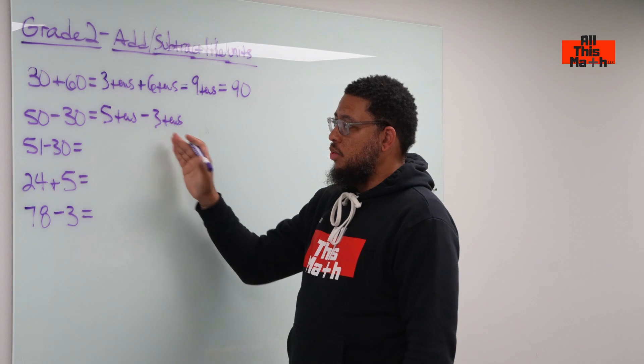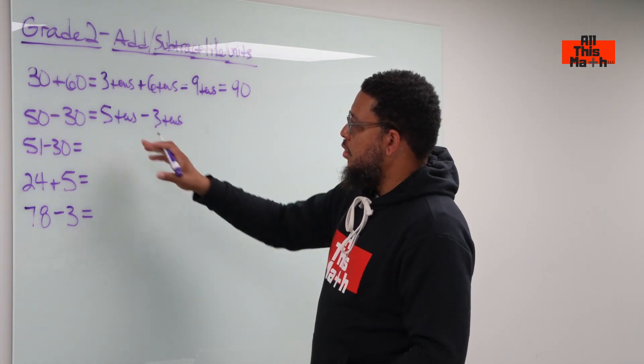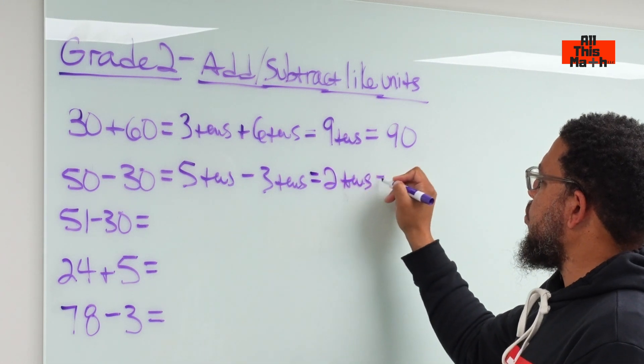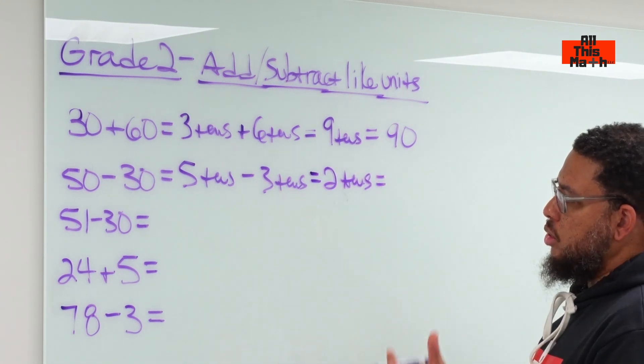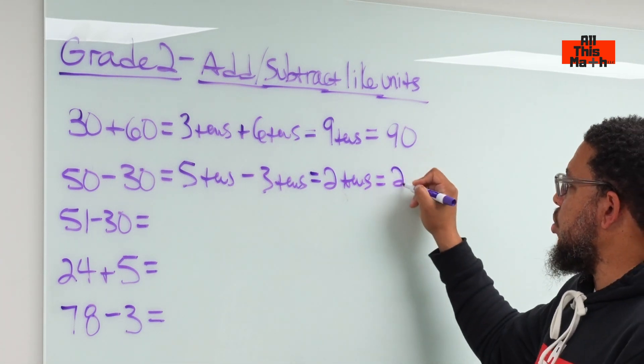So you have five take away three, which makes the math a little more simple and manageable. Five take away three is two. So we have two tens, and two tens will be 20—that's actually doing multiplication. Two times 10 is 20.